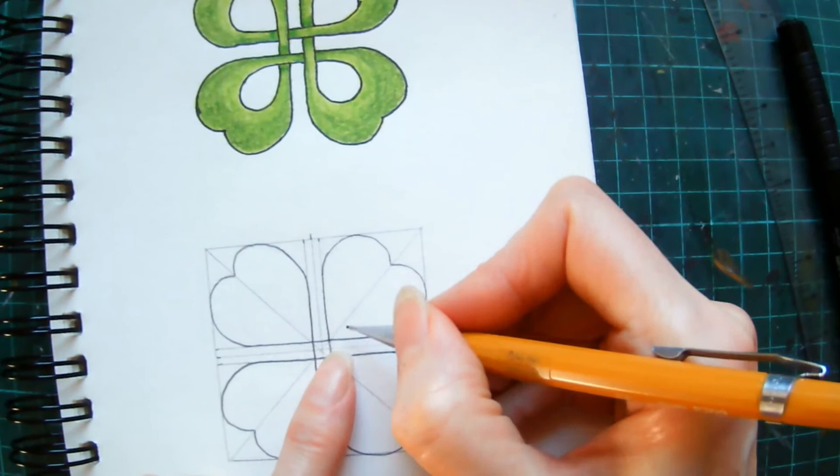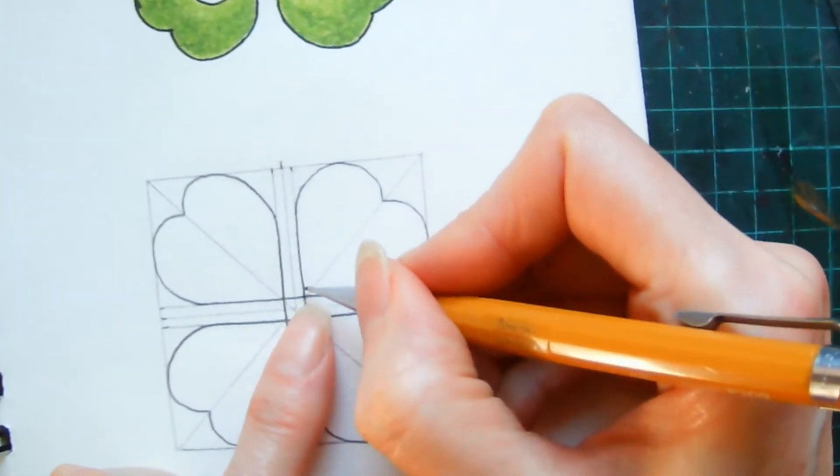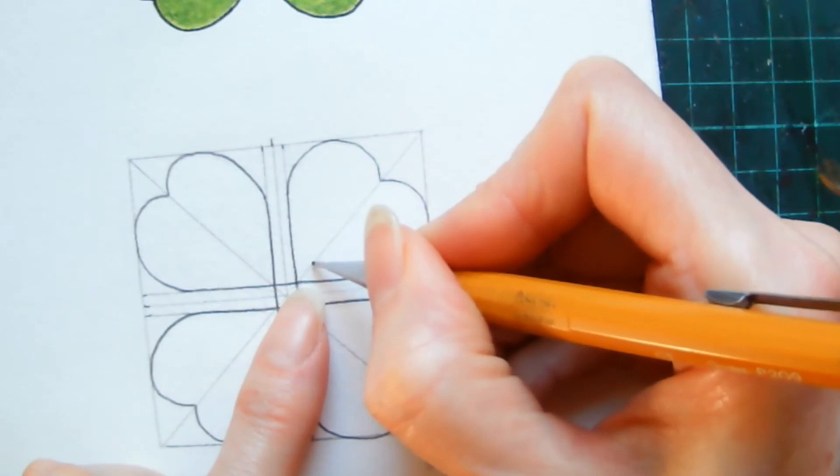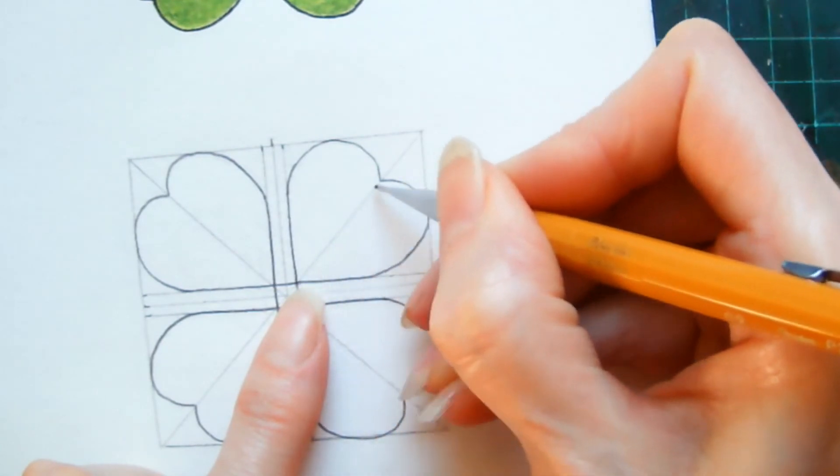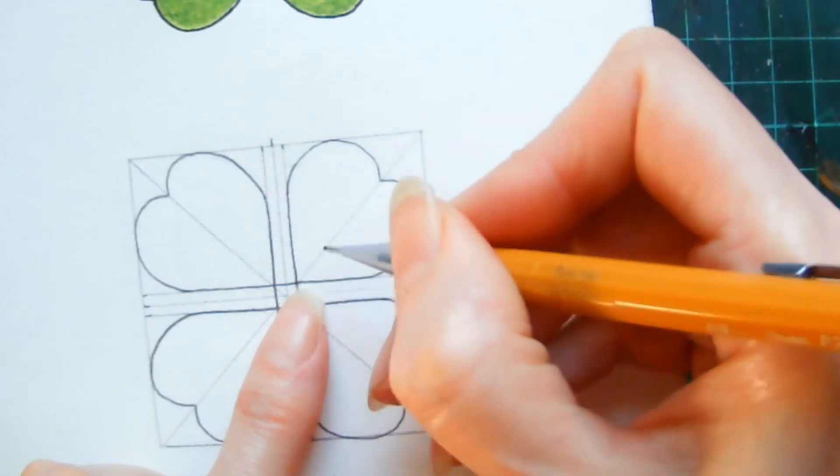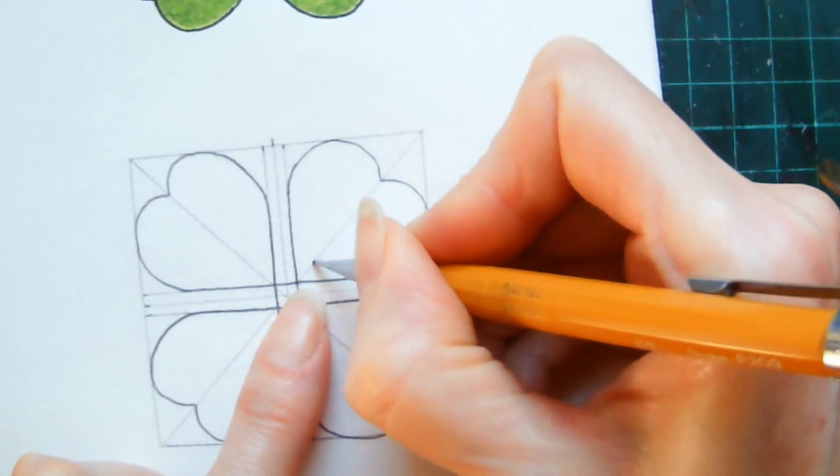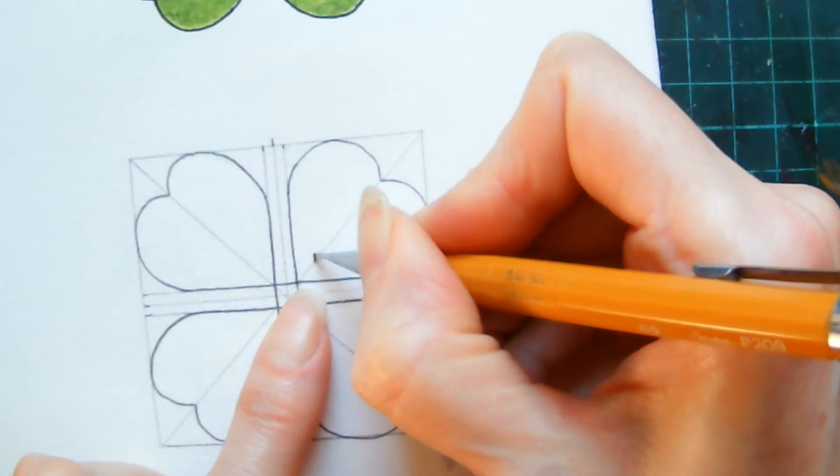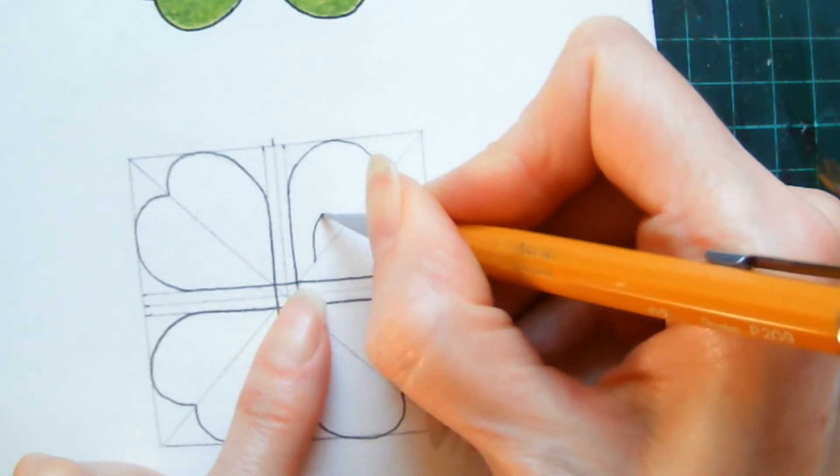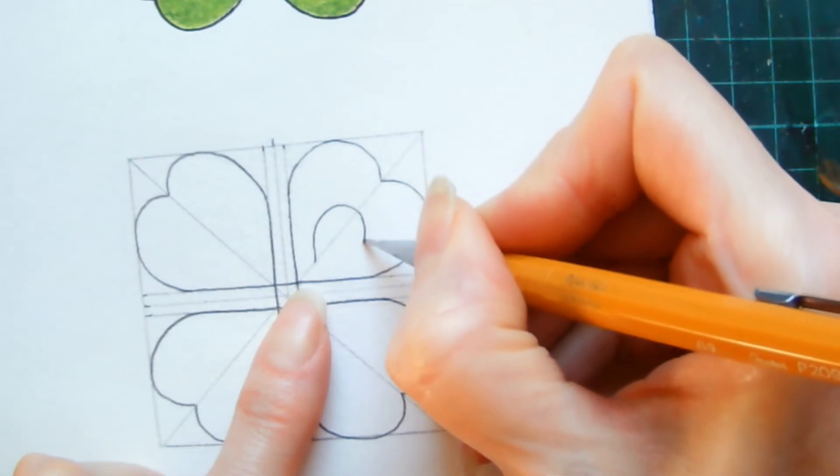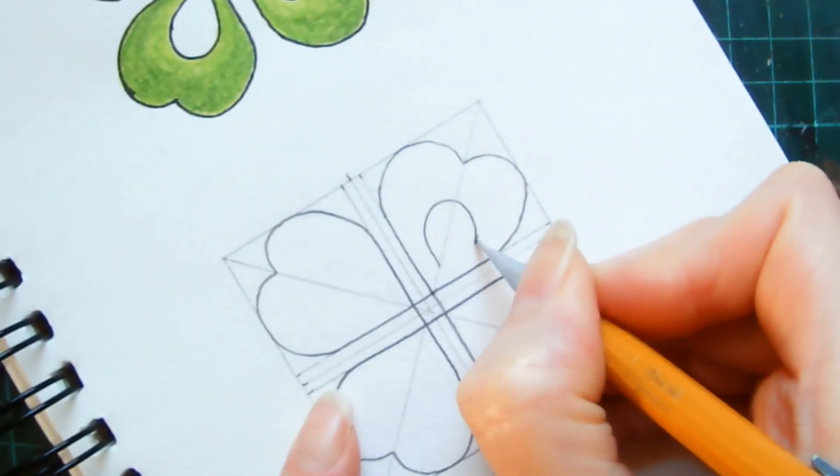So we're going to start off with parallel lines to the ones that we've already drawn, and starting off with your diagonal line here as a base, put your pencil where the diagonal line meets and you're going to draw a teardrop shape so that it meets up back again.